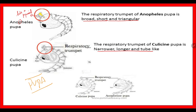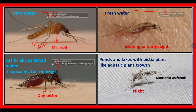Coming to the pupa form: the Anopheles pupa — take 'P' from Anopheles — it is like a pyramid, which is triangular. So the Anopheles pupa has a broad, stout, and triangular siphon tube. In the Culicinae pupa, 'L' — it is narrow, longer, and tube-like.